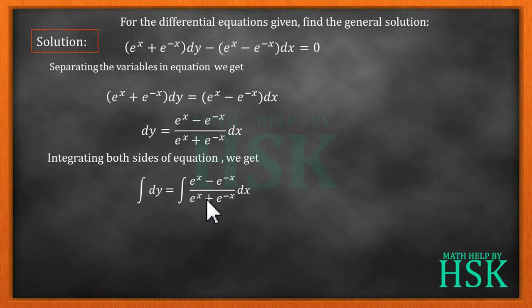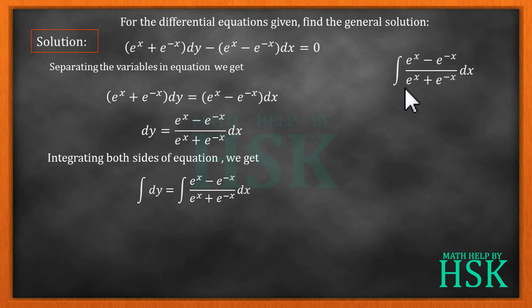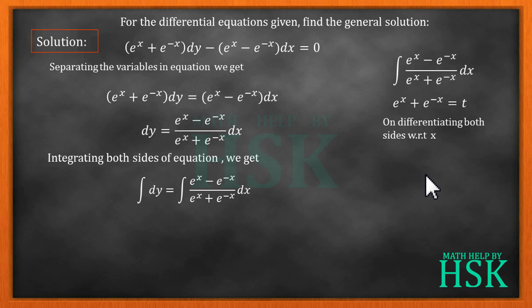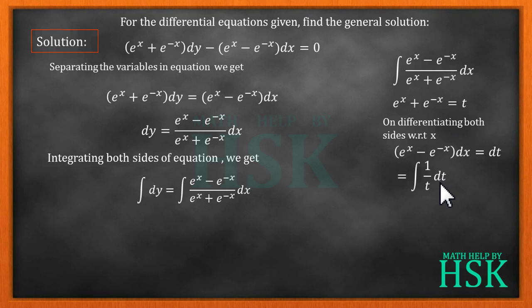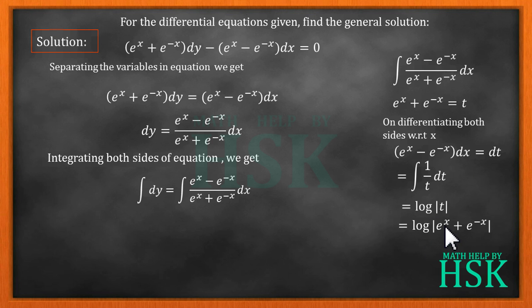Now this integral on the right hand side can be solved by substitution method only, therefore we are going to solve this integral separately. To solve the integral, we substitute (eˣ + e⁻ˣ) as equal to t. On differentiating both sides with respect to x, we get (eˣ − e⁻ˣ) dx equal to dt. On substitution, we obtain the given integral as (1/t) dt, and on integrating we get log t, or log(eˣ + e⁻ˣ).